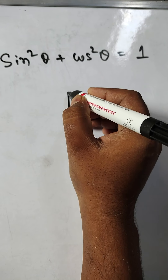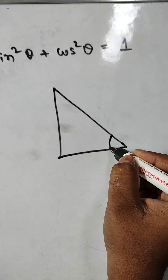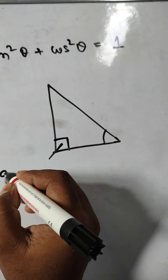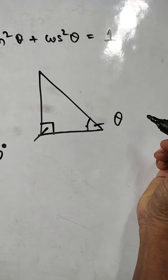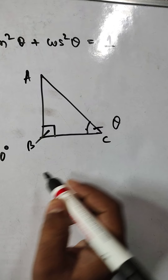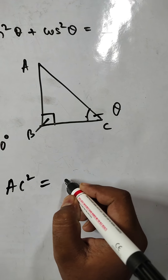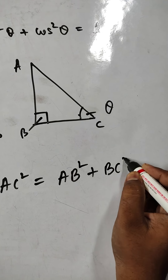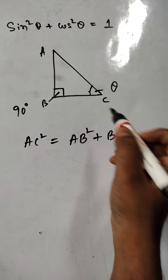First of all we need to know about this. This is a right angle triangle, this is 90 degrees, and this is unknown angle theta. So A, B, C — according to Pythagoras theorem we know that AC square is equal to AB square plus BC square. This is a right angle triangle.